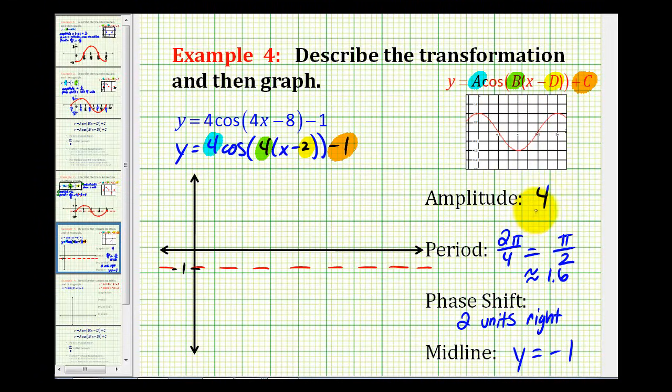Next, the amplitude is 4, so there'll be a maximum value of 4 units up from negative 1. That would be positive 3. If there wasn't a phase shift, we would graph this function from 0 to pi over 2 units, or from 0 to 1.6. Let's just mark that on our graph. So here's 0, and we'll call this 1.6, or roughly pi over 2 radians.